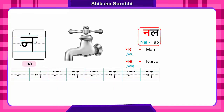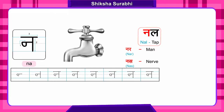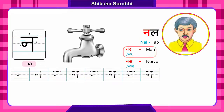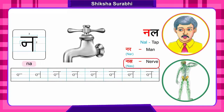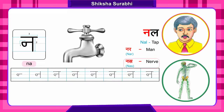Nal means tap. This all of you know — you love to play with water. So always you keep the tap open. That's called tap. Then Na say Nar. Nar means man. Then Na say Nas. Nas means nerve. What is nerve? Inside our body there are lots and lots of nerves which carry our senses to the brain and make us understand things. It's called nerve.